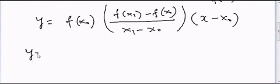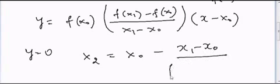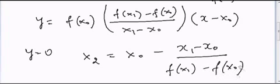So now if you want to solve for x2, what we need to do is we need to put y equal to 0. And in this case, x2 will be equal to x0 minus [x1 minus x0] divided by [f of x1 minus f of x0] times f of x0. So we can solve for x2 and then keep doing this again and again so that we can reach the final answer.